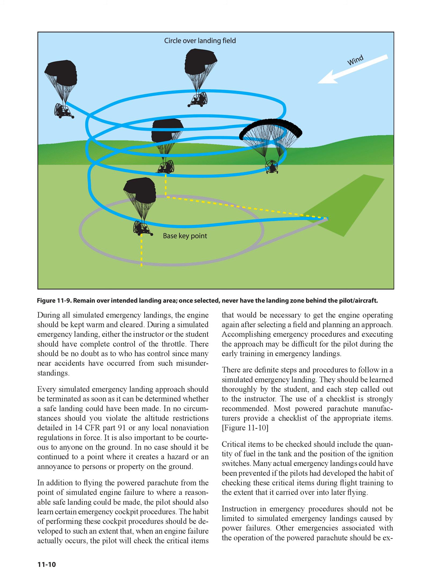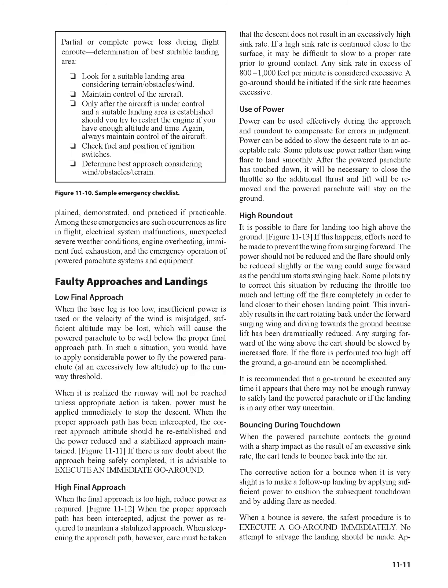Instruction in emergency procedures should not be limited to simulated emergency landings caused by power failures. Other emergencies associated with the operation of the powered parachute should be explained, demonstrated, and practiced if practicable. Among these emergencies are such occurrences as fire in flight, electrical system malfunctions, unexpected severe weather conditions, engine overheating, imminent fuel exhaustion, and the emergency operation of powered parachute systems and equipment.